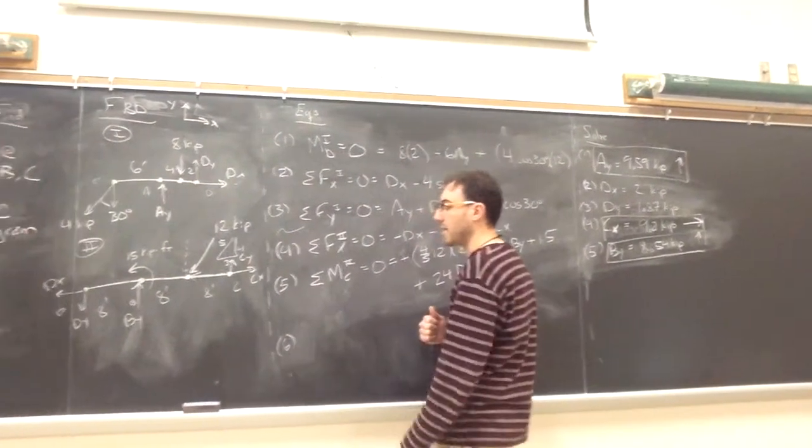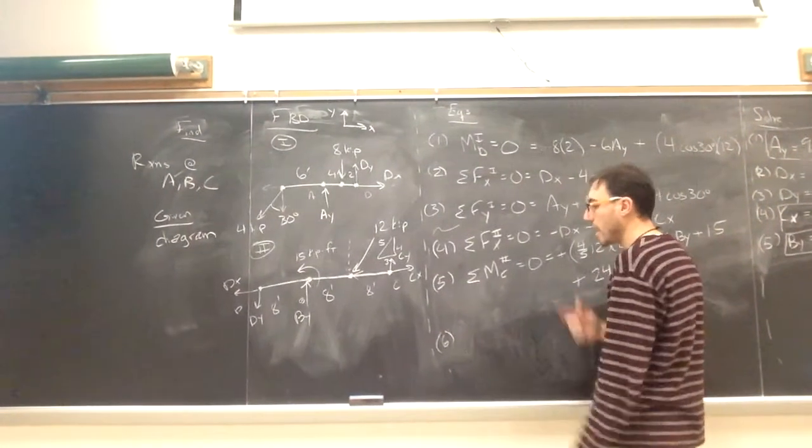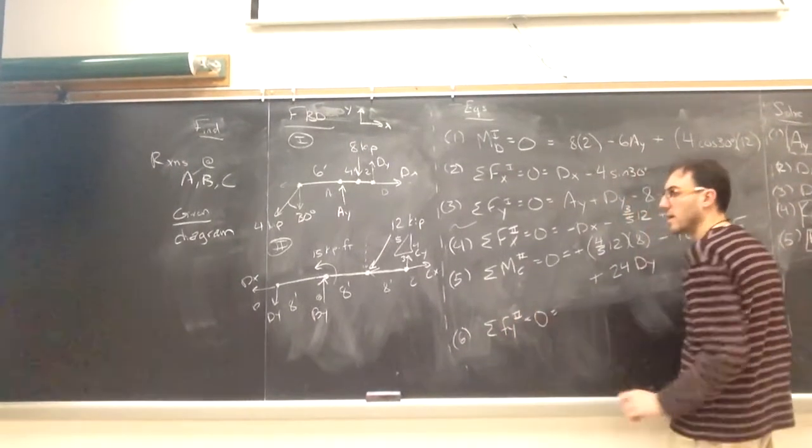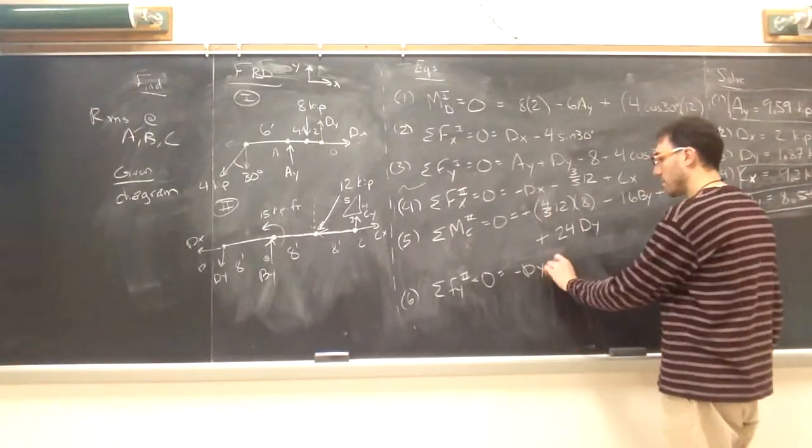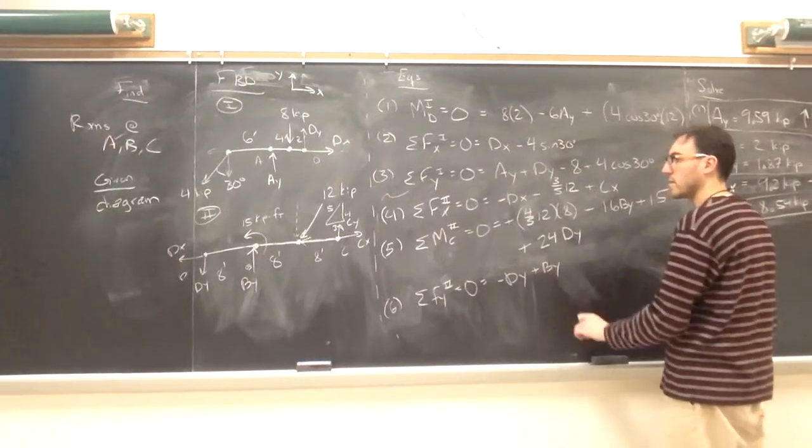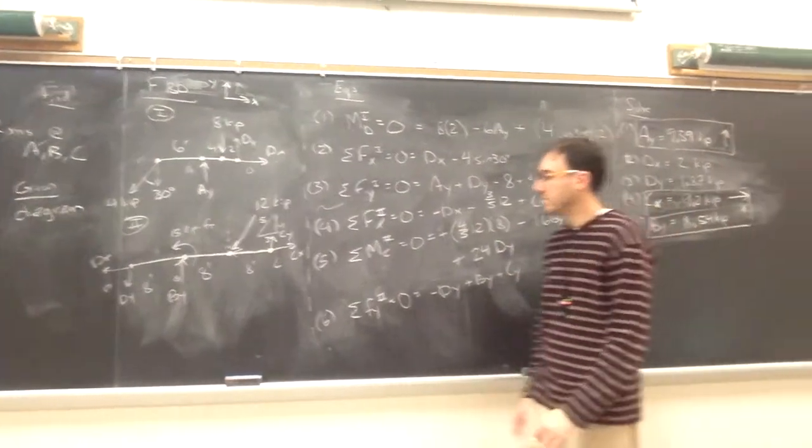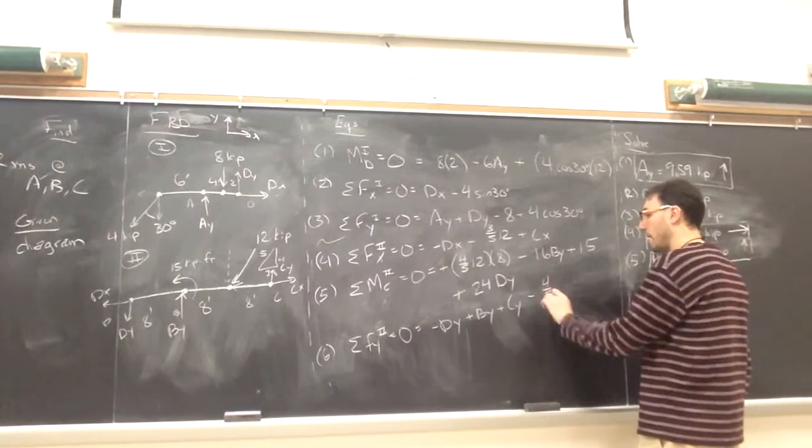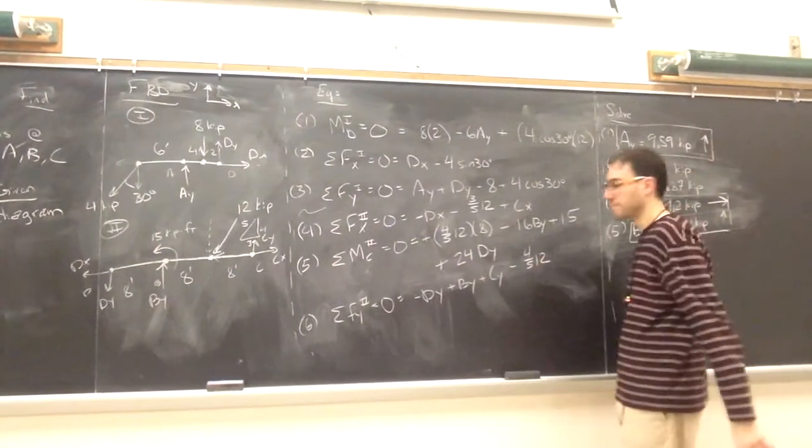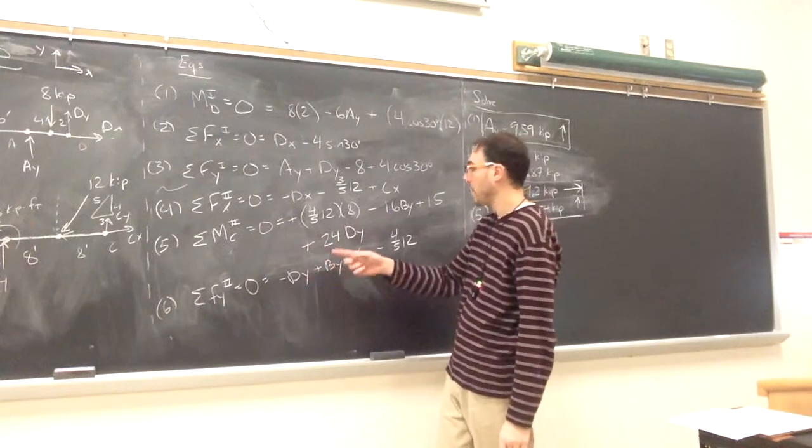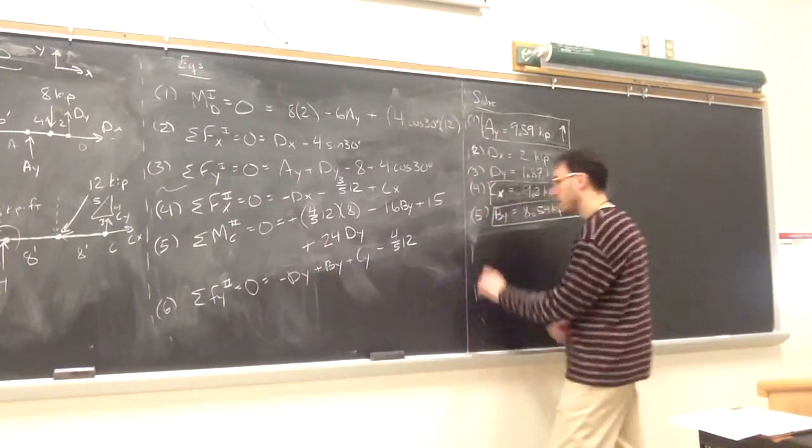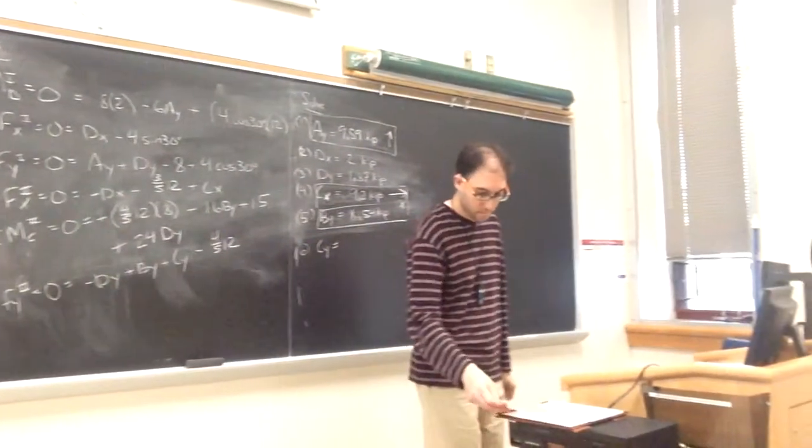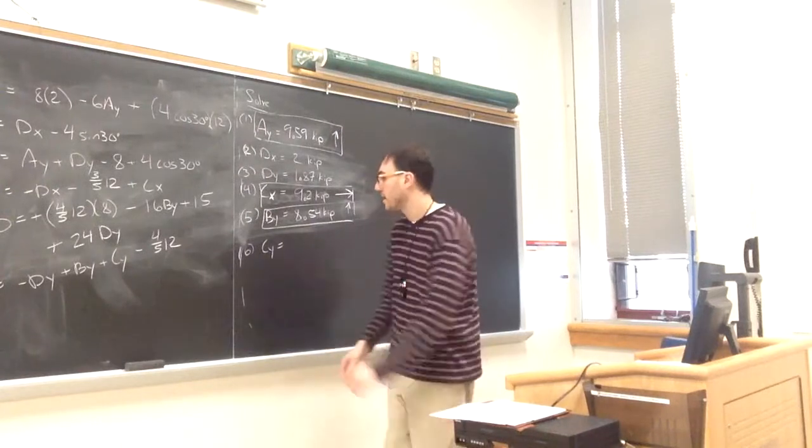And finally, the last unknown is the value for CY. At this point, I can take the sum of forces in the y direction. Minus DY, plus BY, plus CY. And then the vertical component of the 12 kip force, which is pointing down. So minus 4 fifths times 12. I know DY from equation 3. I just found the value for BY. That means the last thing I don't know is CY. So CY, I get 2.93 kip. And that is pointing up.